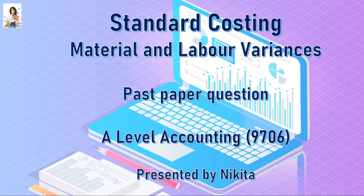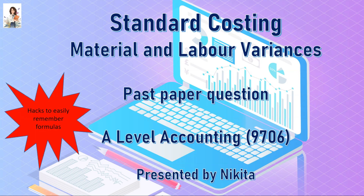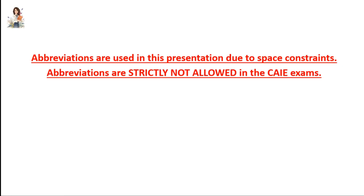Hello everyone, welcome to a short lesson video on the topic Standard Costing for Cambridge A-Level Accounting. In this video, we will understand the concepts of material and labor variances and solve a past paper question on the same. We will also learn some simple hacks to easily remember formulas. Please note, abbreviations are used in this presentation only due to space constraints. Abbreviations are strictly not allowed in the Cambridge exams.